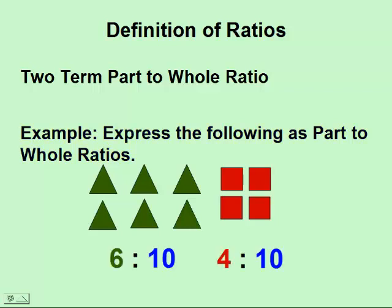So for the triangles, they represent six triangles to ten total objects. For the squares, there are four squares to ten total objects. So the triangles and squares together make up ten objects. And this becomes a part-to-whole ratio.